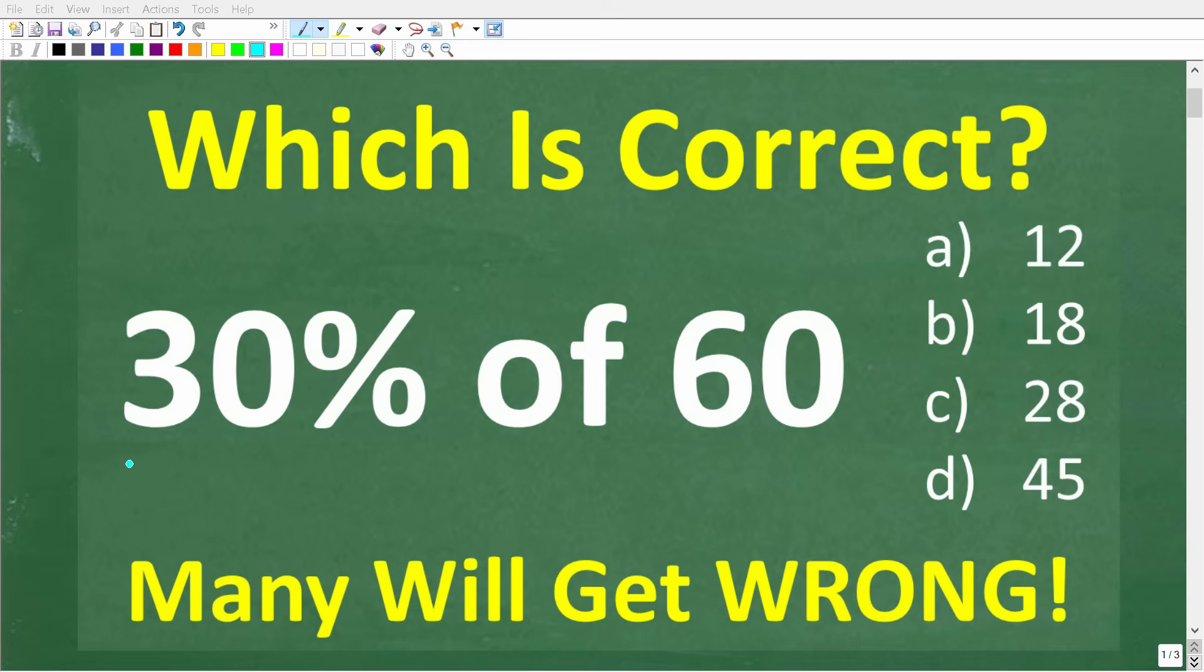If you can't solve this problem without using a calculator, well, you may need to do some review of basic math. All right, so let's take a look at the question. We have 30% of 60.